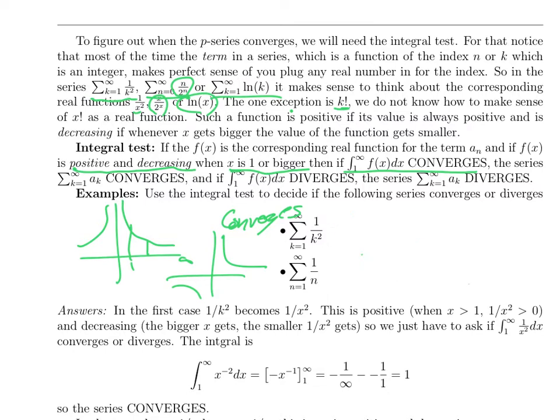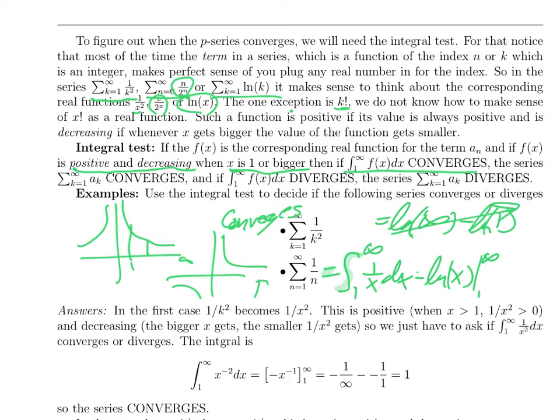In the second case, 1 over n, we replace it with the integral from 1 to infinity 1 over x dx. That's log of x. So that becomes ln infinity minus ln of 1. ln of infinity is infinity. So this diverges.